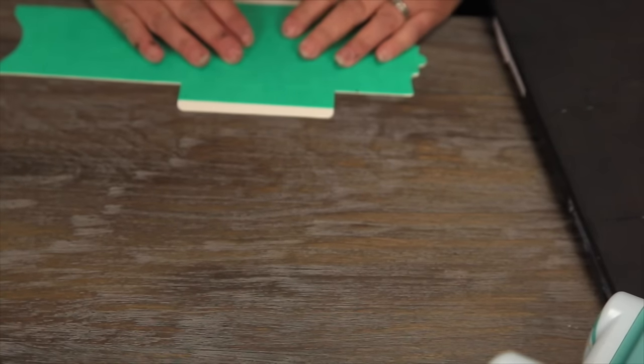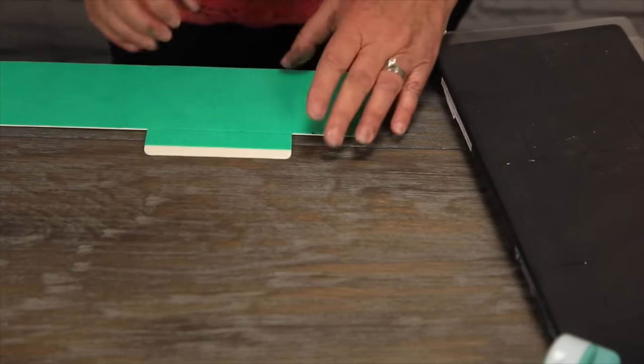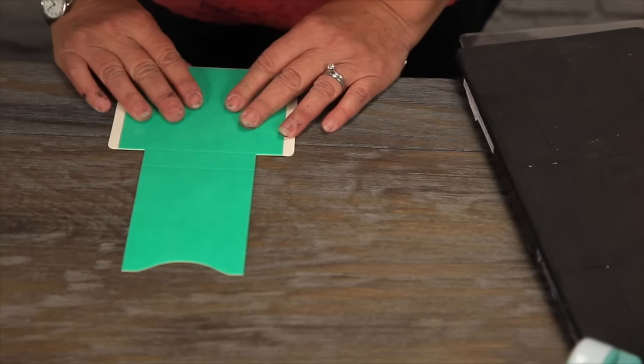Okay now we're going to take our box and do our little scoring routine. Folding over all the way to break the fibers so it's easier to work with.